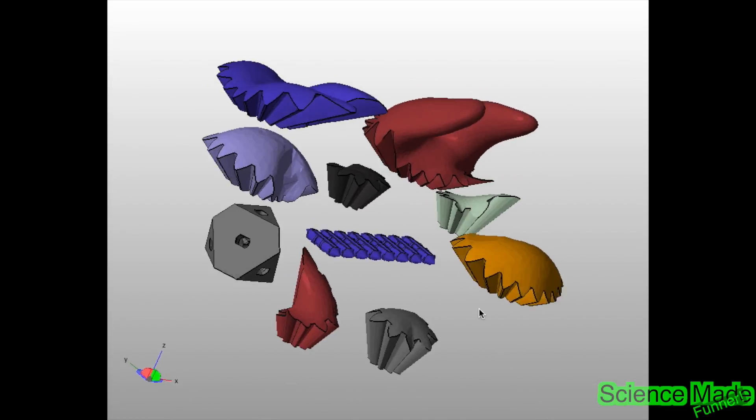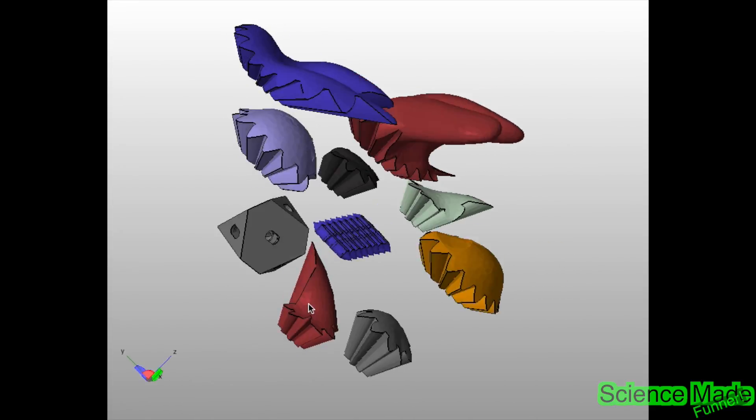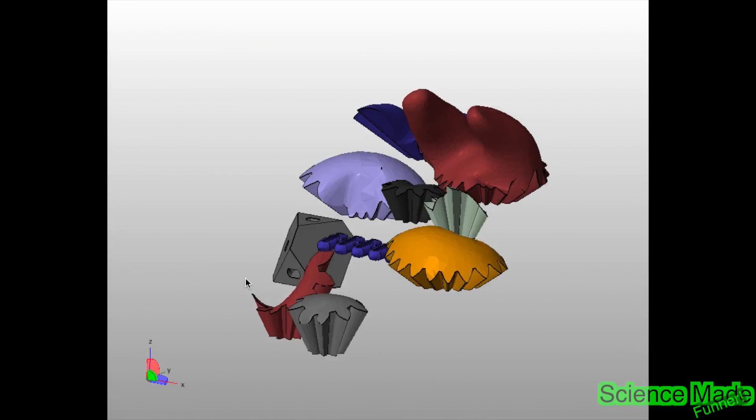All right, today we'll be 3D printing a geared tooth. Here are all the pieces: the middle piece is where all the gears connect, and the pins are used to connect the gears to the middle piece. This is gonna be really cool, so let's get 3D printing.